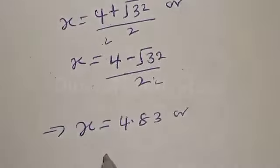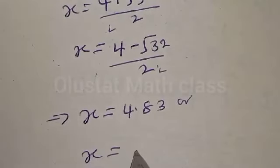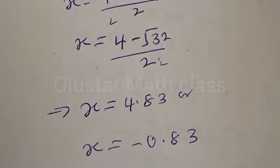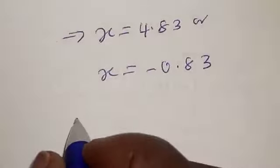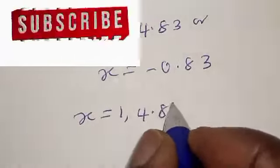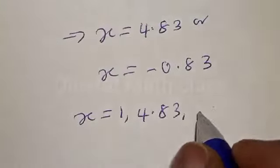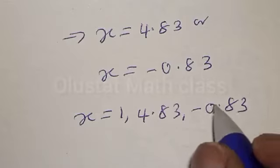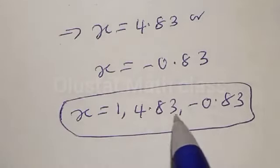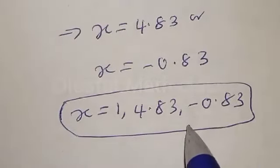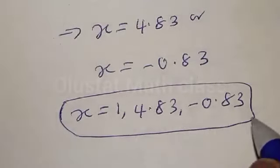Therefore s equals 4 plus root 32 over 2, giving 4.83, or s equals 4 minus root 32 over 2, giving minus 0.83. Therefore our final answers are s equal to 1, 4.83, and minus 0.83. Those are the roots of the equation. If you have enjoyed the class, please don't forget to like, share, comment and subscribe. Thank you.